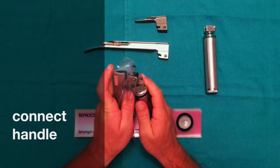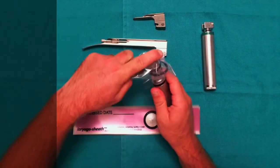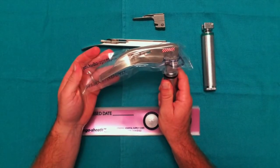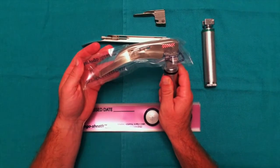Connect your handle to the laryngoscope blade with the sheath still in place. This allows you to check the light and remain covered.